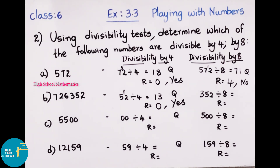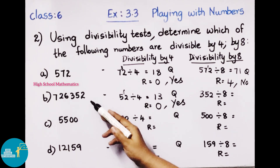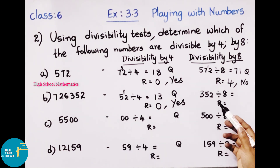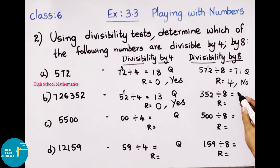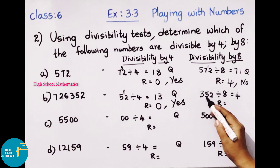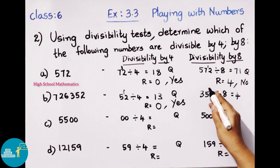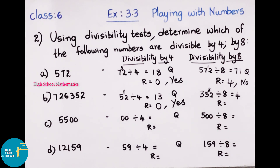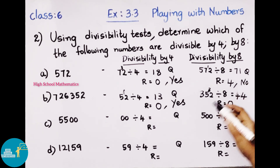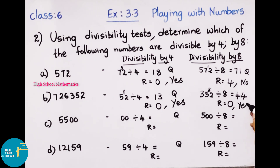Now let's check if 7,26,352 is divisible by 8. Take the last 3 digits: 352. Dividing 352 by 8: 8 times 4 is 32; 35 minus 32 gives remainder 3. Bring down 2, making it 32. 8 times 4 is 32; remainder is 0. So 352 is divisible by 8. Yes, 7,26,352 is divisible by 8.